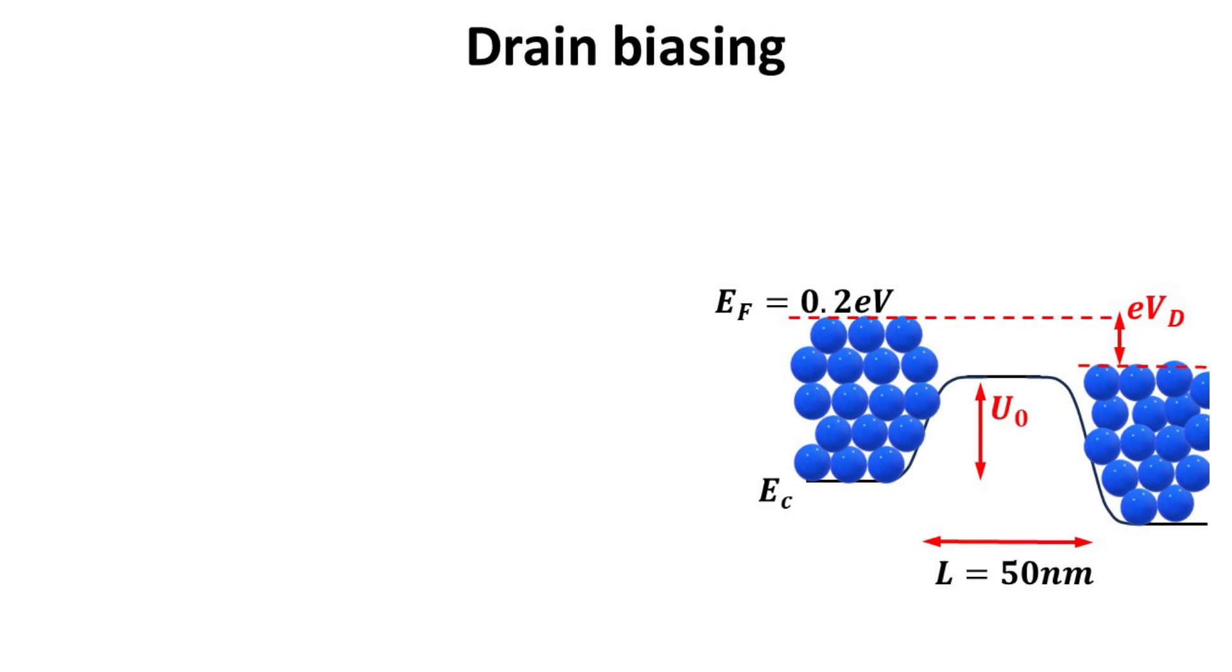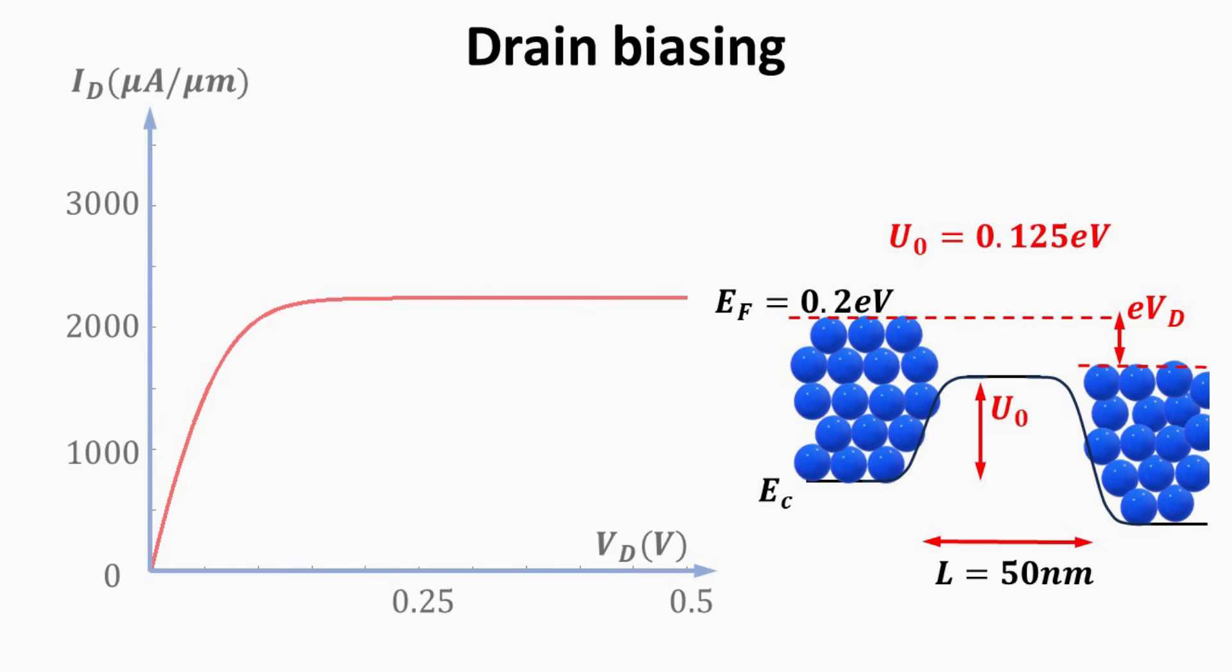Part 4. Drain Biasing and Current Saturation. We are now ready to see the IV characteristics of our nanoscale MOSFET. Let's consider a 50 nanometer long channel, and a source doping of 0.2 electron volts as shown. We consider the on state, where the channel barrier is lower than the source Fermi energy, herein set to be U0 equals to 0.125 EV. The calculated drain current from our model is plotted as function of the drain voltage Vd.